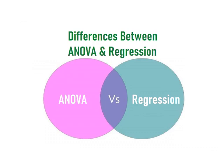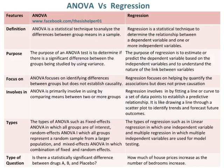Differences between ANOVA and Regression. ANOVA is a statistical technique to analyze the differences between group means in a sample. Whereas, regression is a statistical technique to determine the relationship between a dependent variable and one or more independent variables.